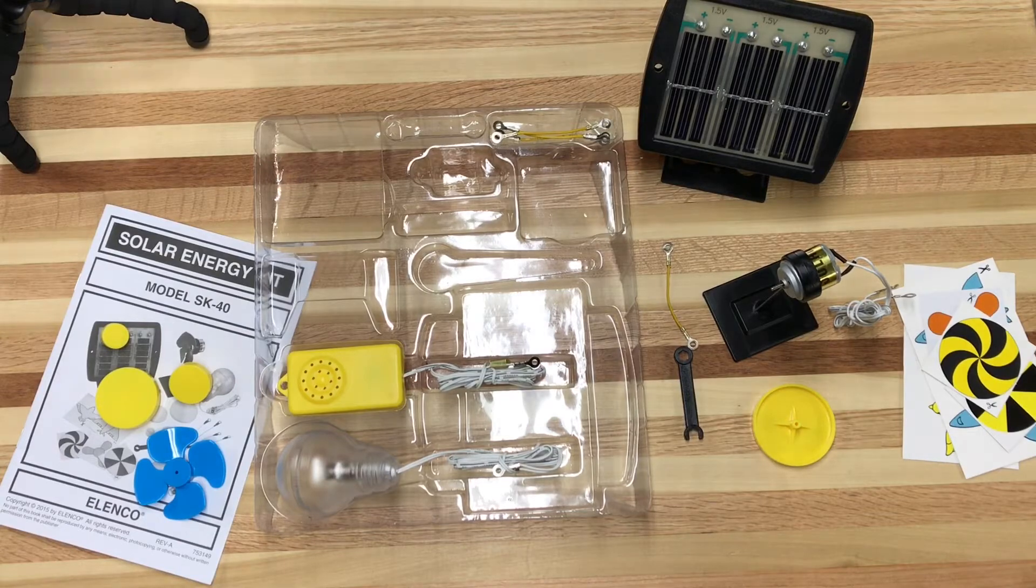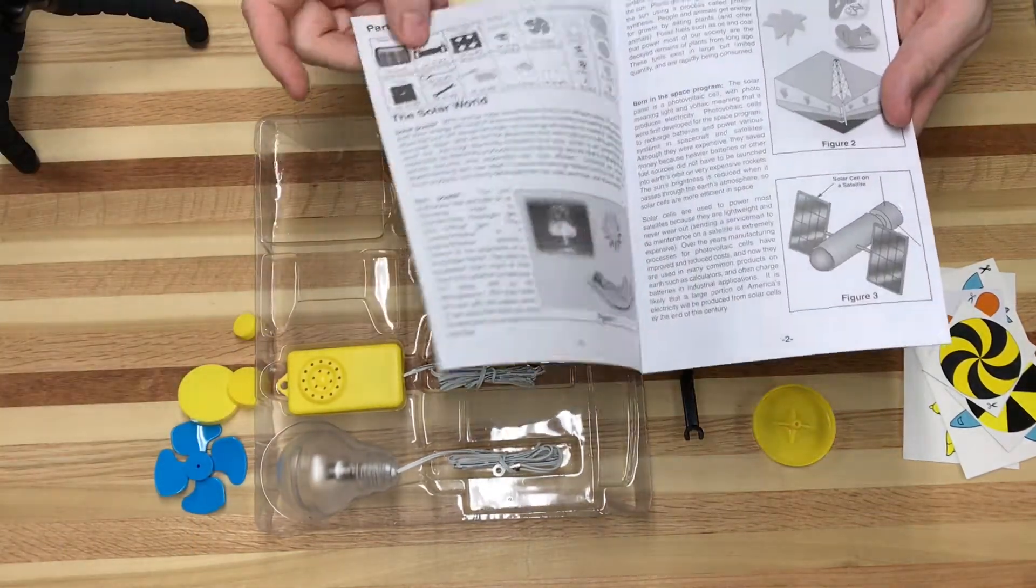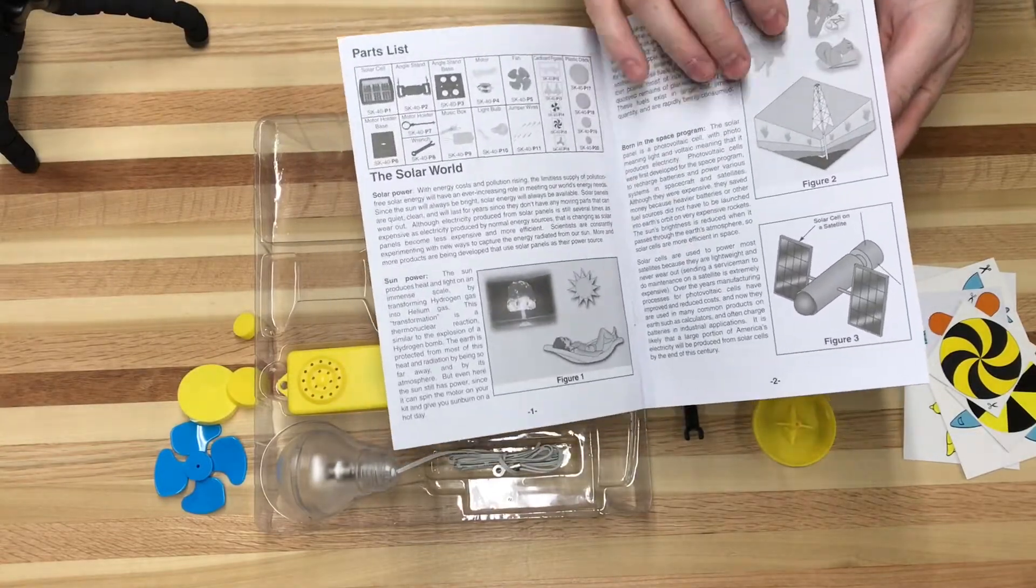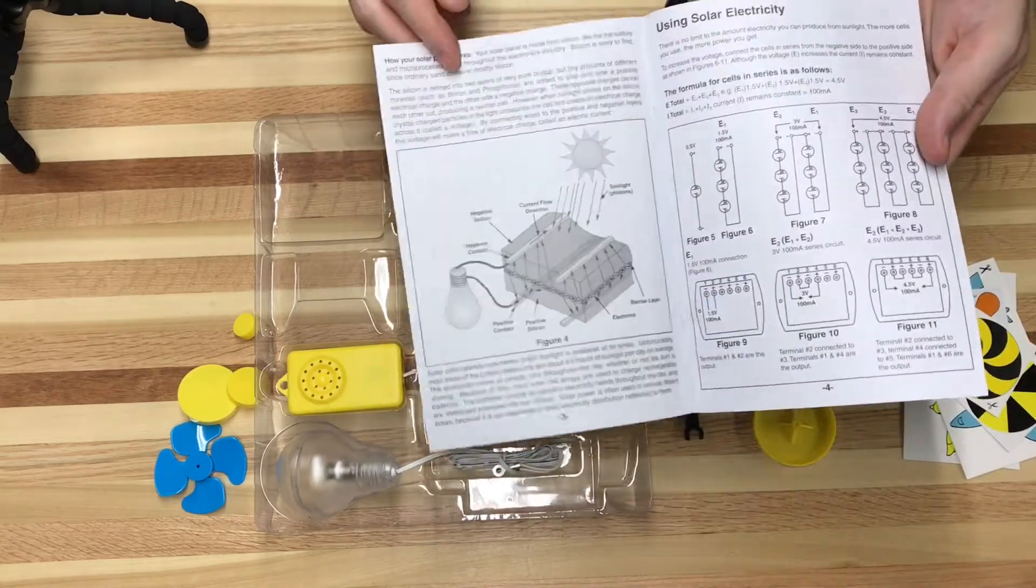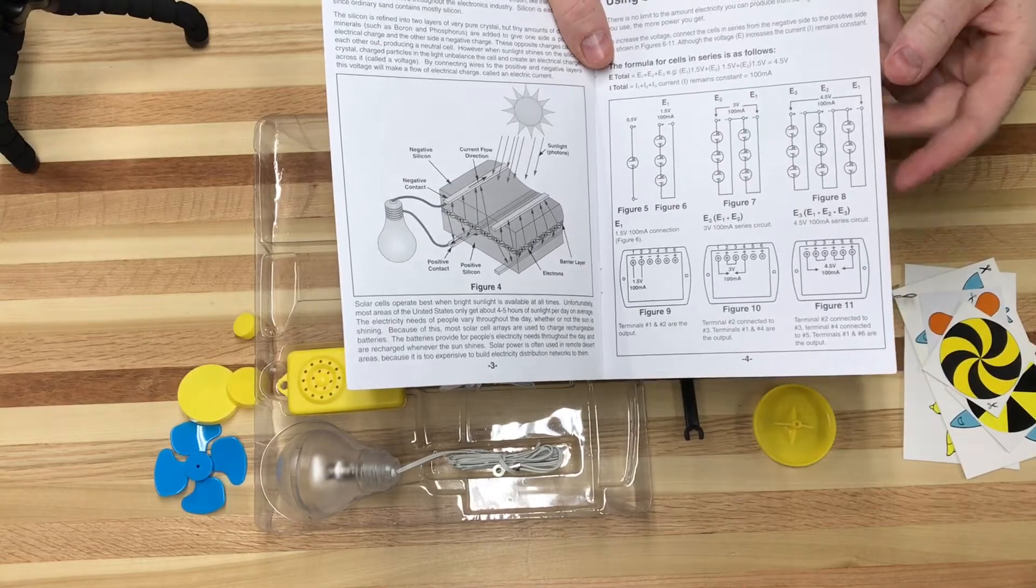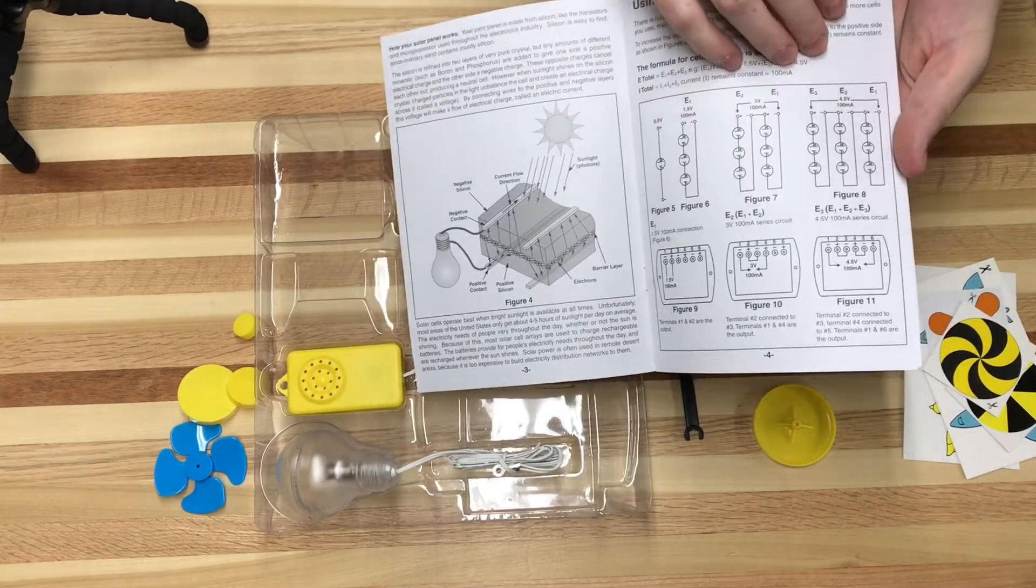The instructions actually, I should mention, do have some info on solar power. I don't know if you'd be able to utilize this in your class as a handout, but if you gave each kit a kit they would have some basic information. It does talk about the wiring and how the solar panel actually works, which I think is cool, and how to get different power settings out of this one panel.